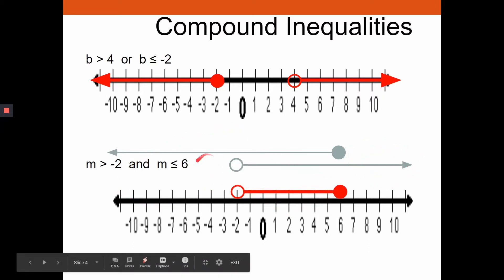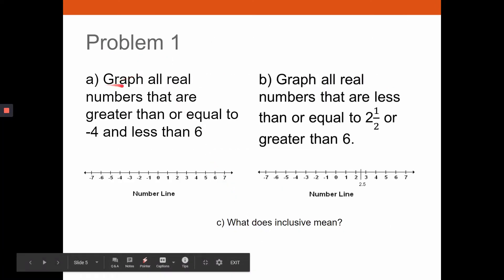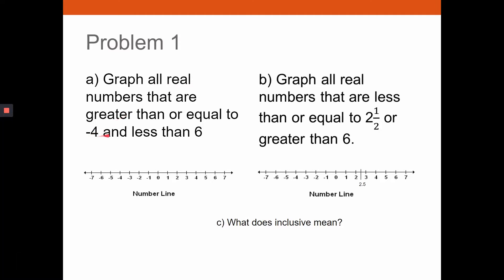Problem 1a: graph all real numbers greater than or equal to negative four AND less than six. The first part includes negative four — closed circle, arrow right. The second part excludes six — open circle. The overlap is between those two points. Because it's an AND statement, shade only in between: include negative four, exclude six, and include everything in between like 1.5, 2.2, and seven-eighths.